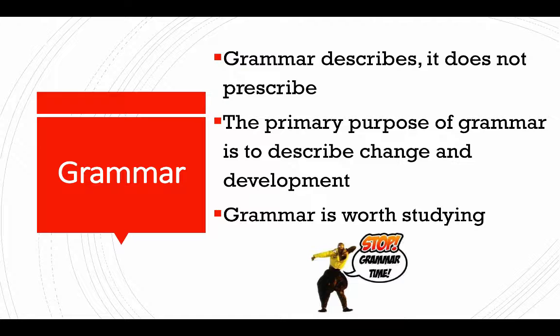Think about watching an old movie — would their grammar rules be the same as ours? Or you've probably read something in school that was old English, such as Shakespeare, and encountered a lot of words and phrases that seem alien to us today. Language, like other things in the culture, is a reflection of the current socio-cultural and political time period, so it changes.